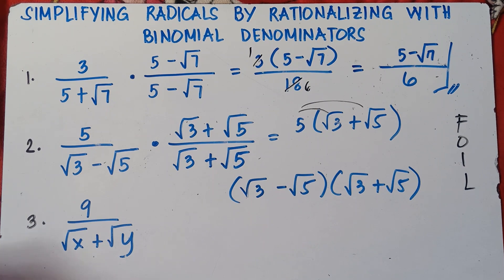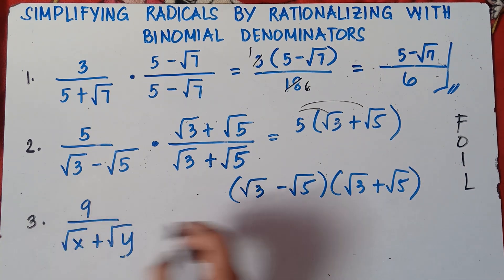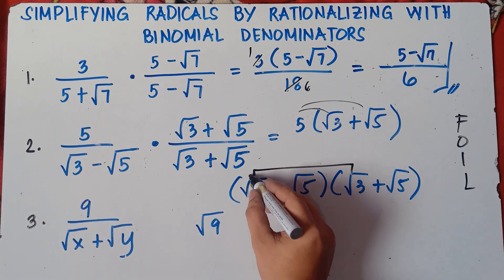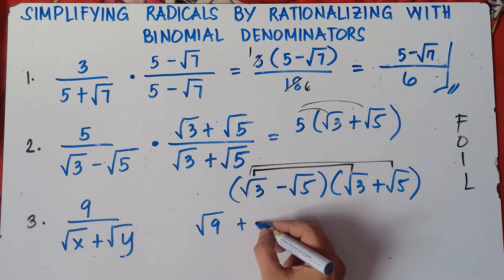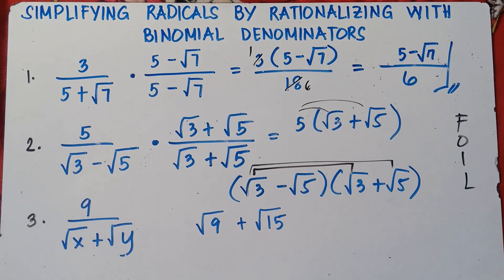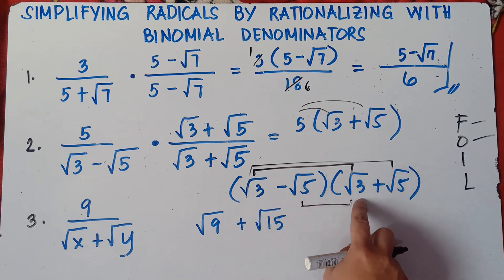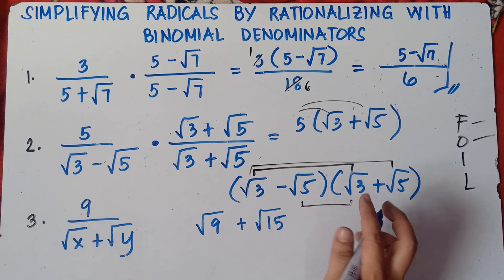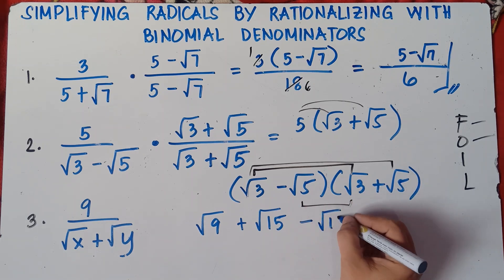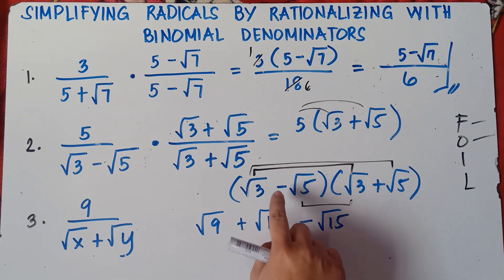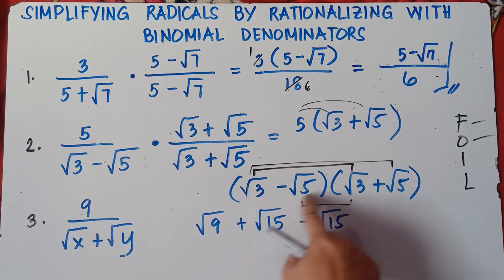FOIL method: First — square root of 3 times square root of 3 equals square root of 9. Outer — square root of 3 times positive square root of 5 equals positive square root of 15. Inner — negative square root of 5 times positive square root of 3 equals negative square root of 15.